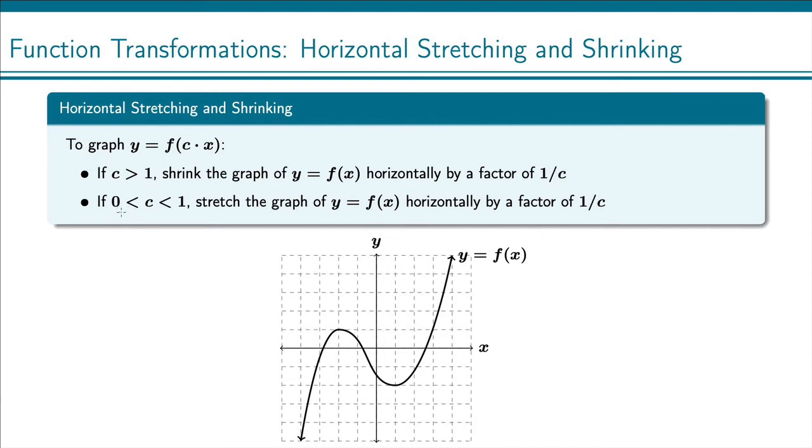If your constant is between 0 and 1, then it's a horizontal stretch. And that is, again, by a factor of 1 over c. Now this number, 1 over c, is actually going to be bigger than 1. For example, if c is 1 third, then 1 over c is 3.